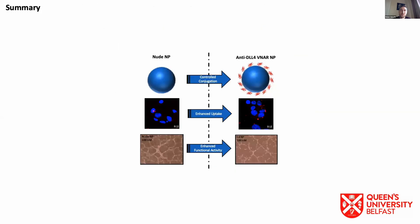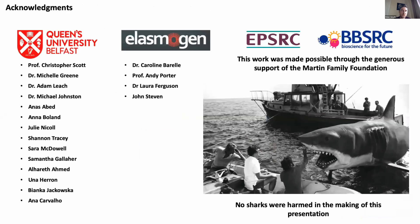As a quick summary, by using VNARs and PLGA nanoparticles we can achieve controlled conjugation, which allows for enhanced uptake into DLL4-positive cells and enhanced functional activity. I'd like to thank everyone involved, particularly Chris, Michelle, and Adam, our collaborators at Elasmogen for supplying the VNARs, and all our funders.